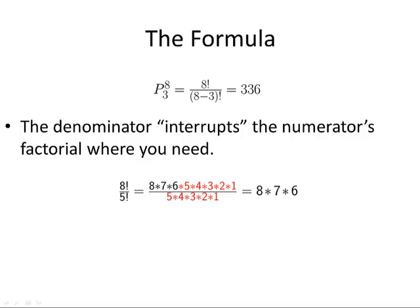That might not make sense until you see this example. We wanted eight times seven times six — this black part. The denominator, five factorial, cancels out all the rest of the terms in the numerator, and we're left with eight times seven times six, which is just what we wanted.